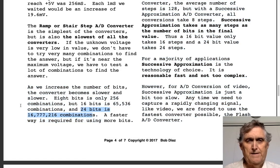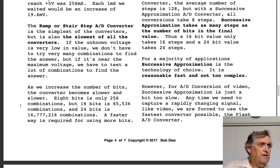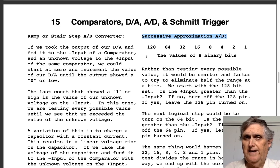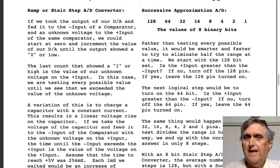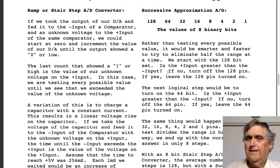With 24 bits you'd need 16 million combinations, so we need a faster approach. My favorite is successive approximation. Remember in a binary number: 1, double it 2, double it 4, 8, 16, 32, 64. Rather than test every possible value, we set the most significant bit high and ask: is this above or below the voltage we're trying to test?